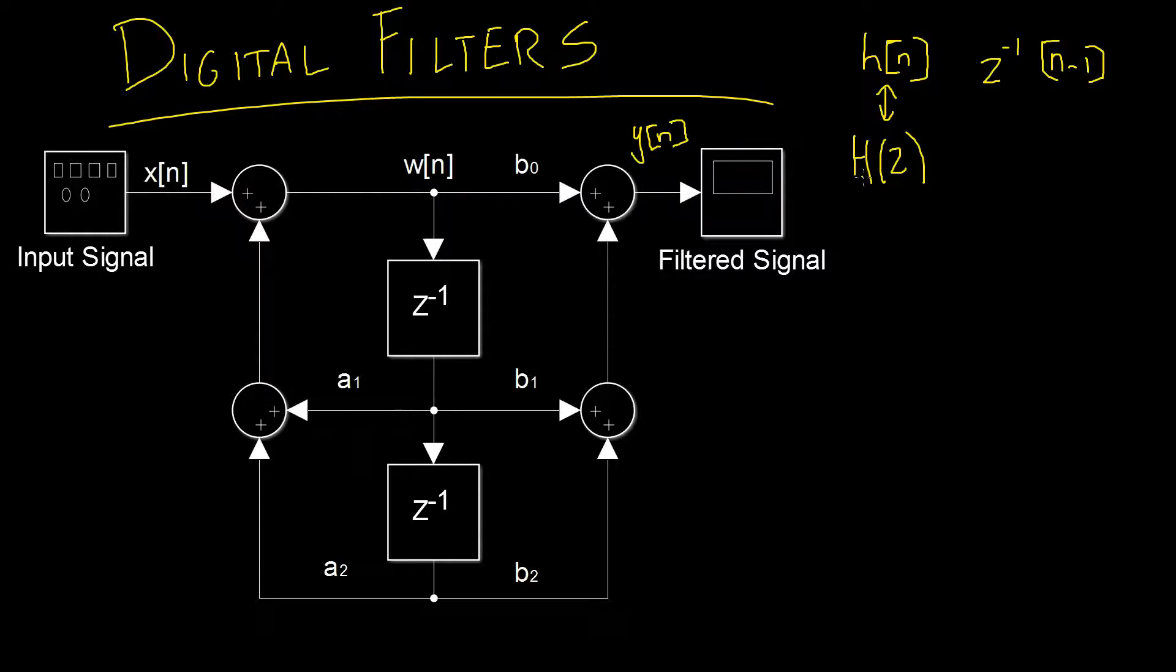We have the signal coming in here to w of n, but what is this signal? Well, we have one lot of x of n passing through, plus this line here and this line here and this line here. So let's define those now. We have w of n is equal to our x of n, our input, and this z to the power of negative 1 here is simply a one sample delay in the system. So how can we write that if we have n?